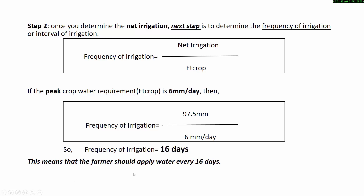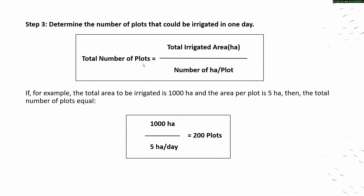This means the farmer should apply water every 16 days. Step 3: Determine the number of plots that could be irrigated in one day. Total number of plots equals total irrigated area divided by the number of hectares per plot. For example, if the total area is 1,000 hectares and the area per plot is 5 hectares, then the total number of plots equals 200 plots.